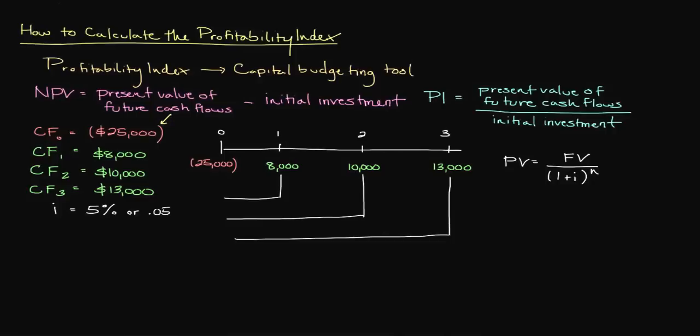Discounting each of the future cash flows by our discount rate of 5% should give us present values of $7,619.05, $9,070.30, and $11,229.89 respectively for years 1 through 3. These values are the result of rounding to the nearest hundredth as well.